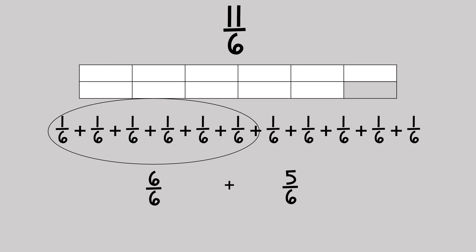We know that six-sixths equals one whole, and there are five-sixths remaining. So six-sixths plus five-sixths equals eleven-sixths. If we want to represent this as a mixed number, six-sixths plus five-sixths would be equivalent to one and five-sixths, because six-sixths is equal to one whole.